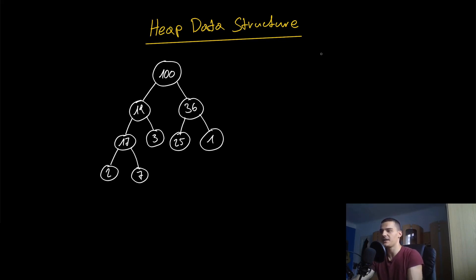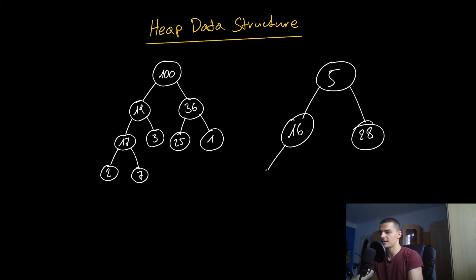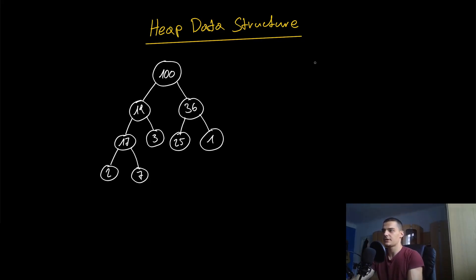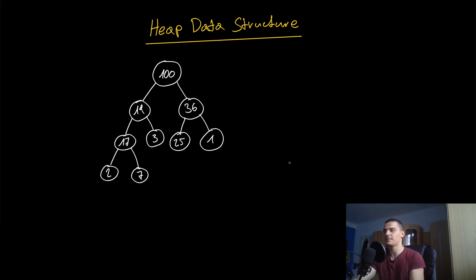You also have the min heap, where it's the other way around — the parent is always smaller than its children. So you could have 5 at the root, then 16 and 28, then even larger values like 50 and 60. Notice that unlike the binary search tree, which we'll learn about in the future, it doesn't matter if the left node is larger or smaller than the right node. The only requirement is that the parent is always larger than its children in a max heap, or smaller in a min heap.